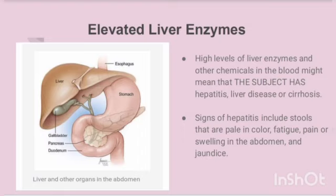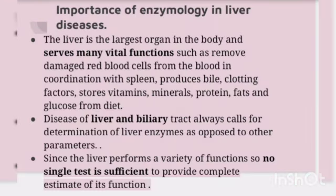High levels of liver enzymes and other chemicals in the blood might mean that the subject has either hepatitis, liver disease, or cirrhosis. Signs of hepatitis include stools that are pale in color, fatigue, pain or swelling in the abdomen, and jaundice.